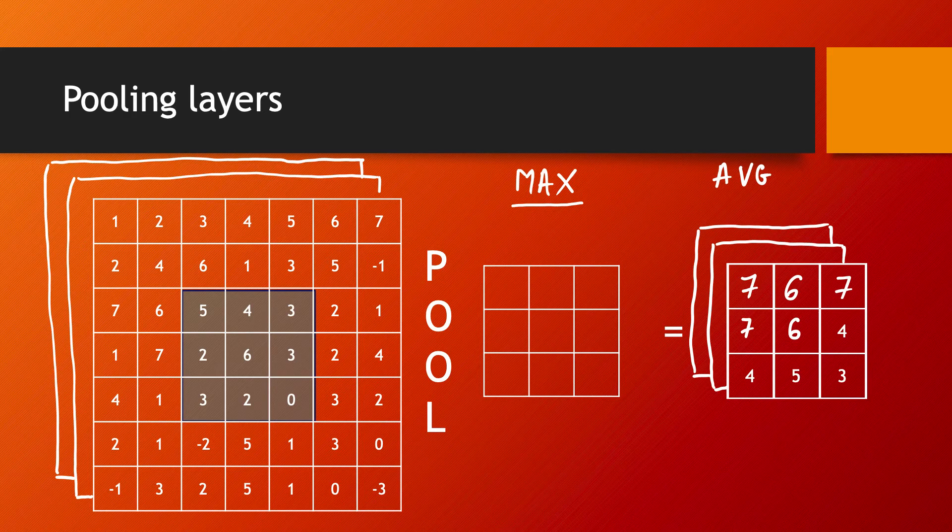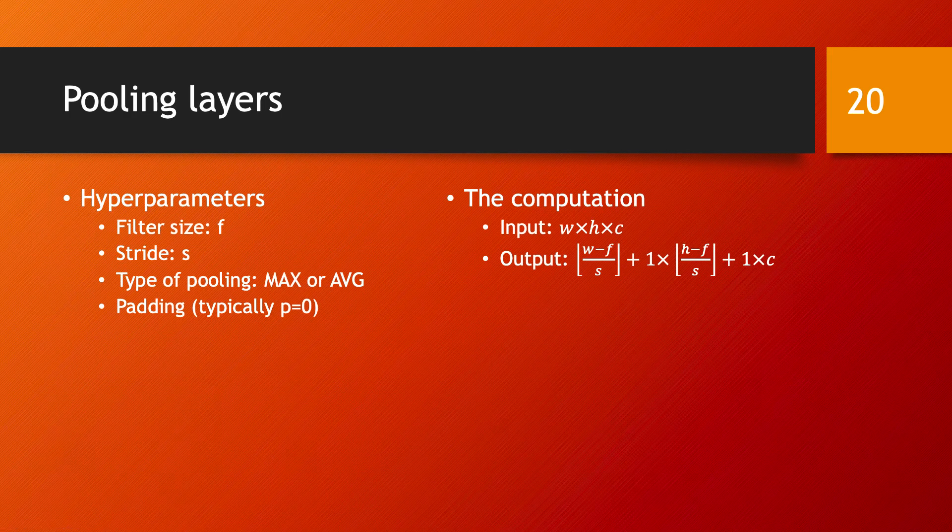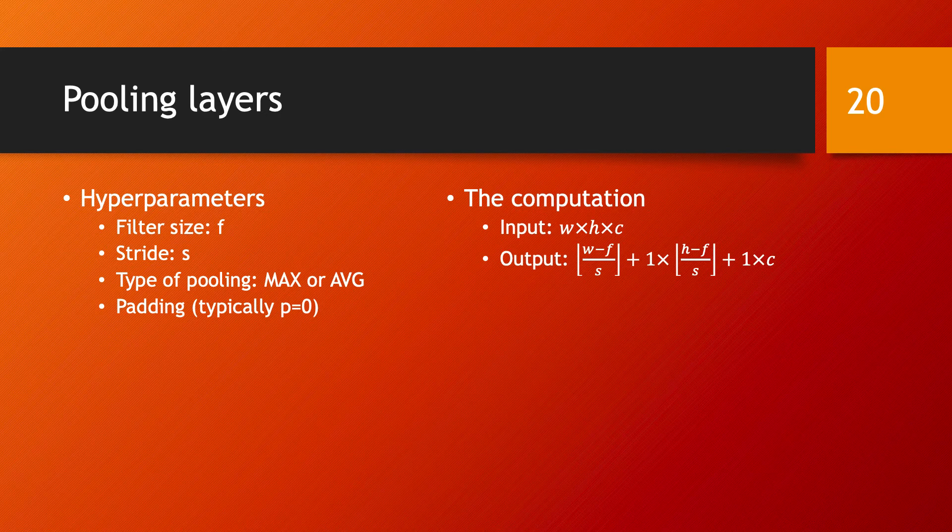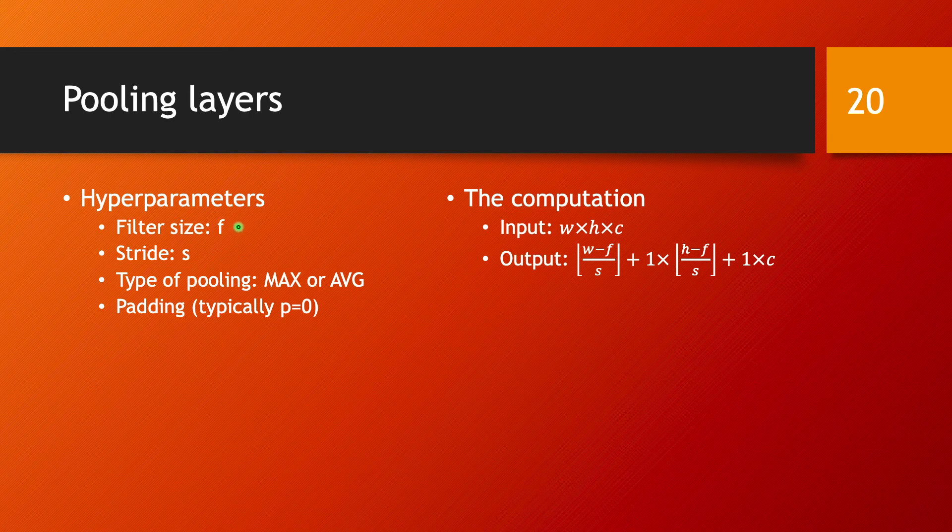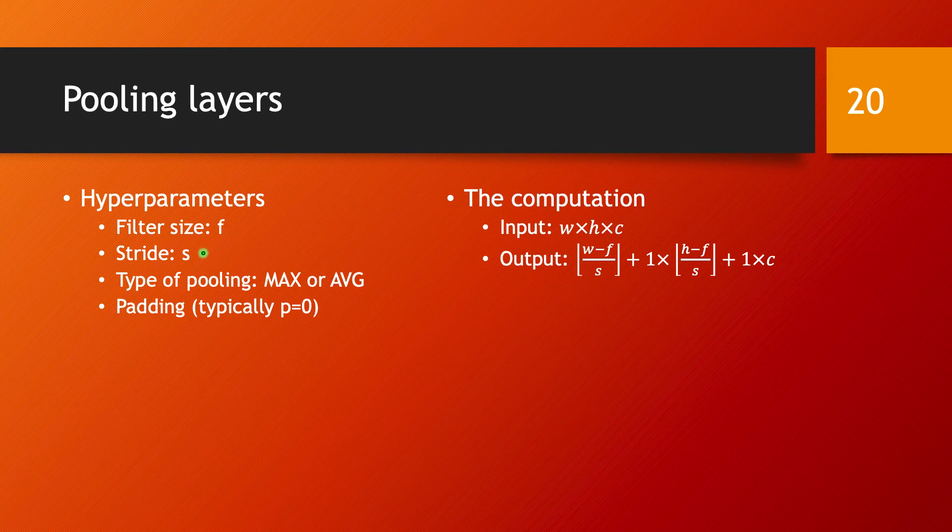I want to just point out the type of computation done in these pooling layers. The moment you set up a pooling layer, you have to choose a number of hyperparameters to have your layer set up. On one hand, you need to choose your filter size F, and then you need to choose your stride S, and then the type of pooling you're going to do. Typically, this is either max or average.